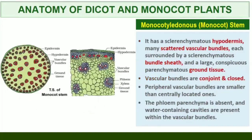Monocotyledonous stem: The monocot stem has a sclerenchymatous hypodermis, a large number of scattered vascular bundles each surrounded by a sclerenchymatous bundle sheath, and a large conspicuous parenchymatous ground tissue. Vascular bundles are conjoint and closed. Peripheral vascular bundles are generally smaller than the centrally located ones. Phloem parenchyma is absent, and water-containing cavities are present within the vascular bundles.